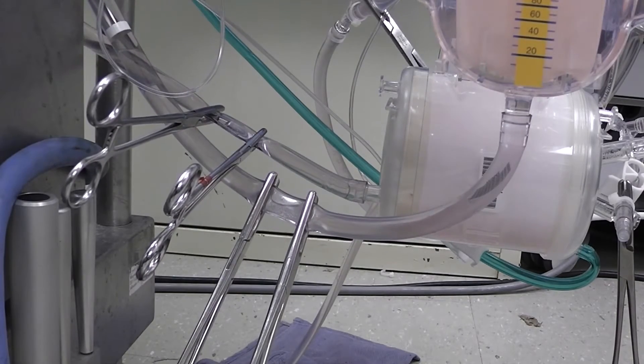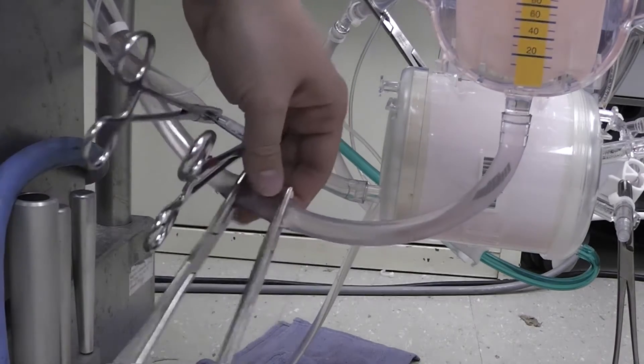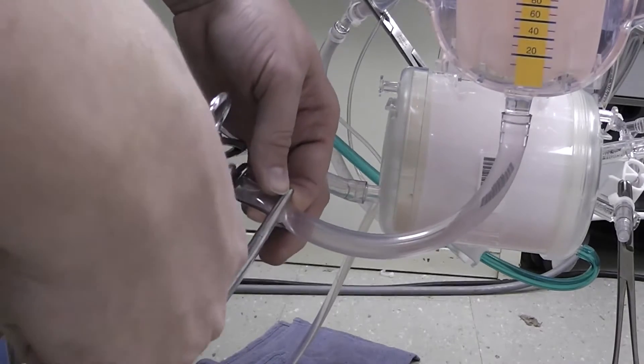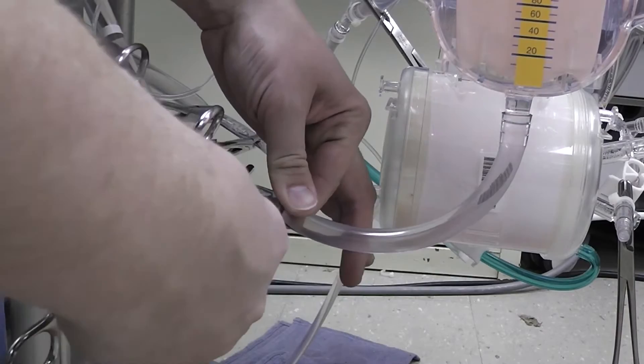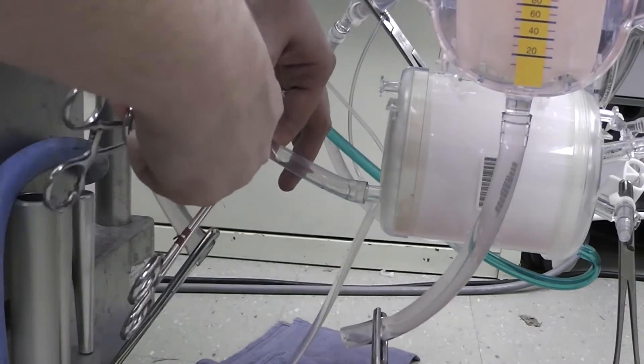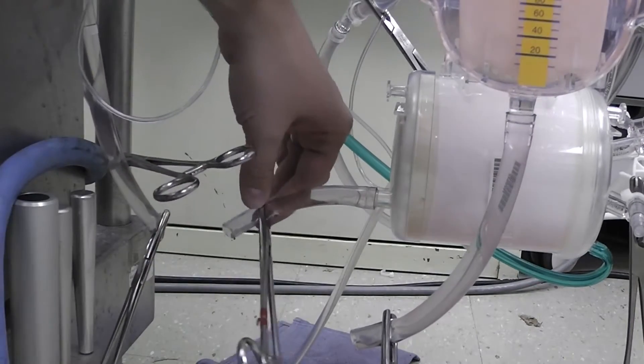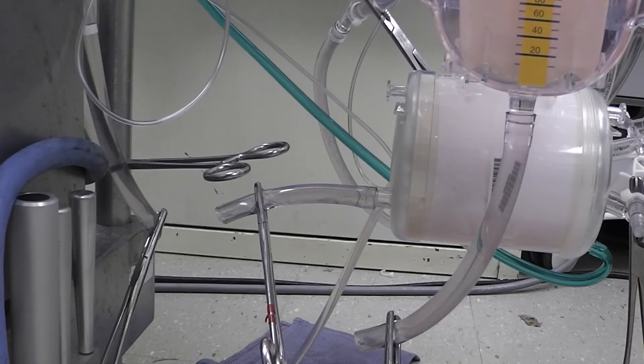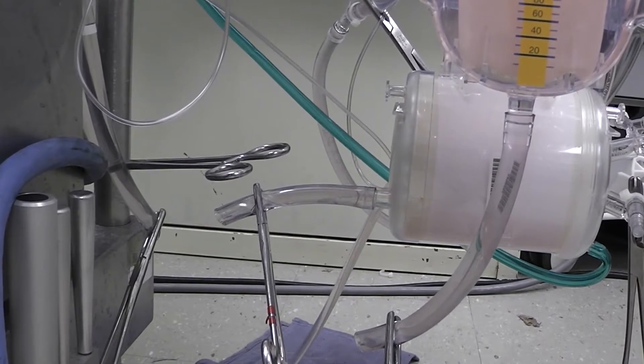Now that we've done that, we're going to use an alcohol or betadine swab on here and we're going to divide this line and do the same for the outlet side. We want to keep those sterile, and now we're going to remove the arterial line from the pump head.